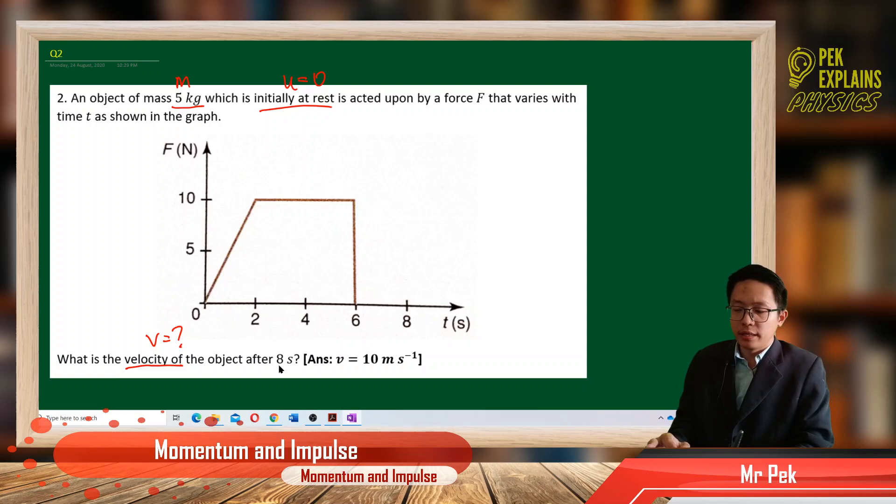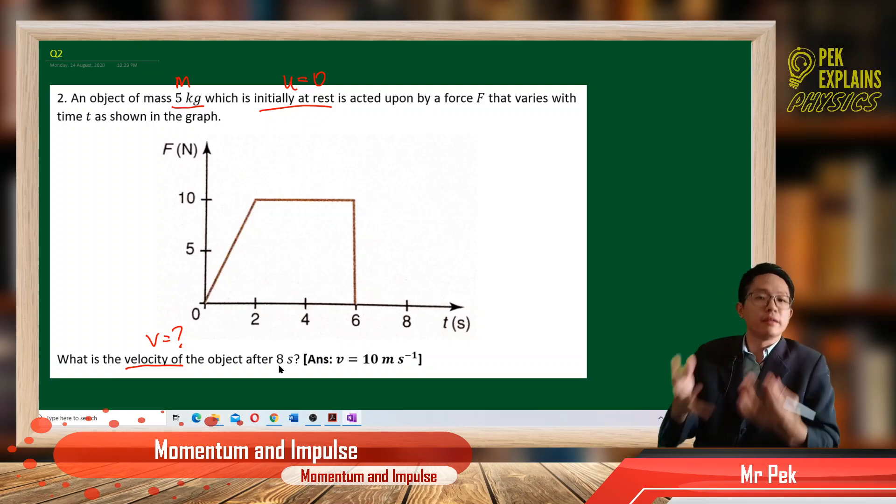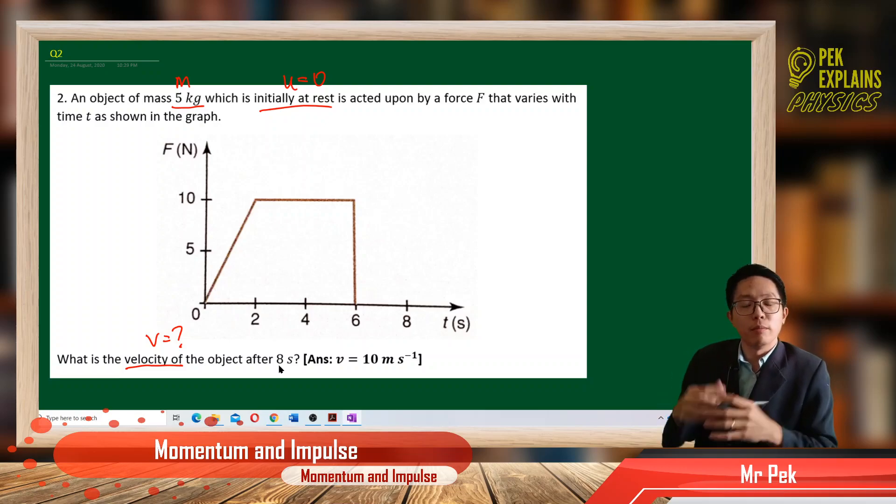After 8 seconds that means the whole graph is finished. Now, this is a force-time graph. What does it tell us? What we learned about force-time graphs in the chapter momentum and impulse?